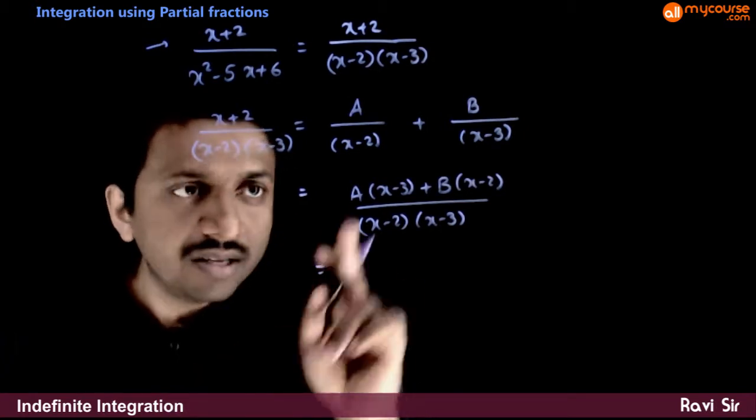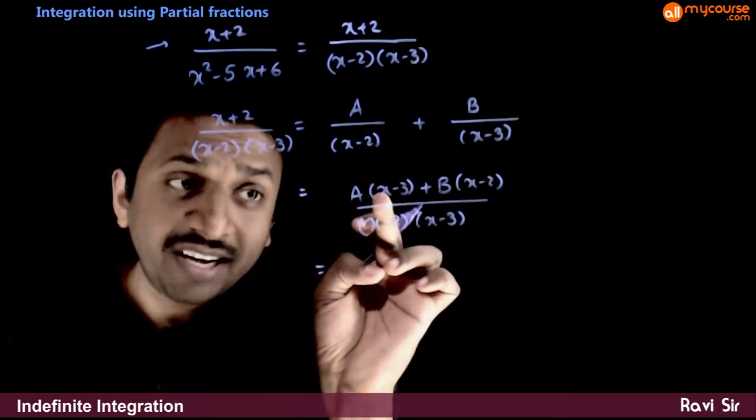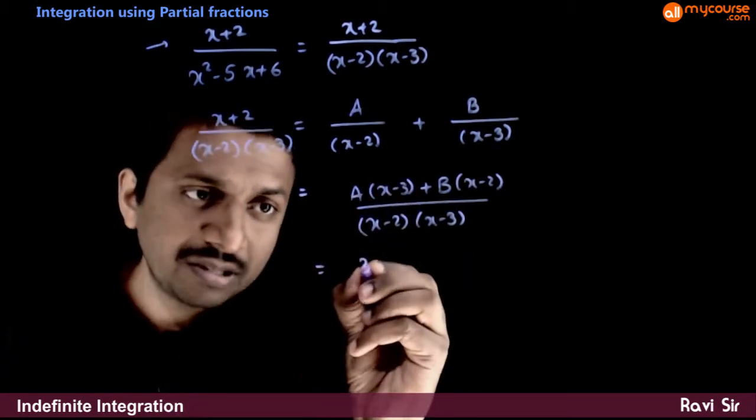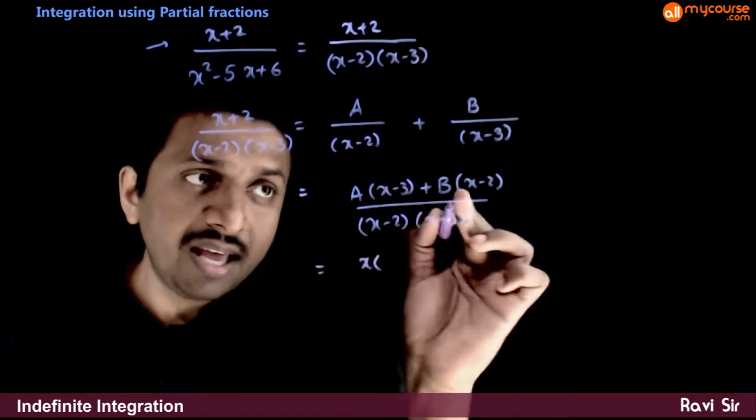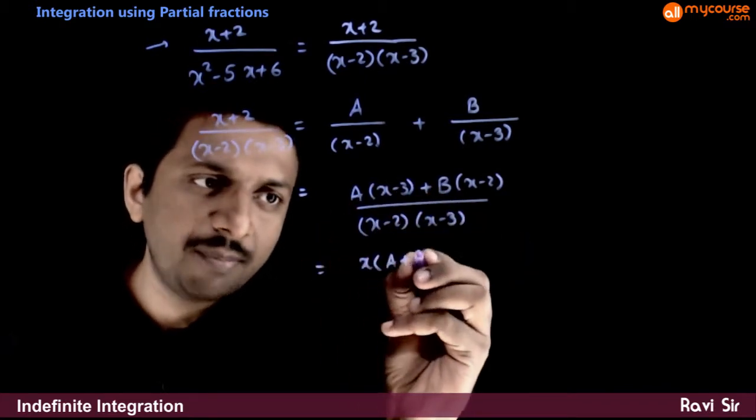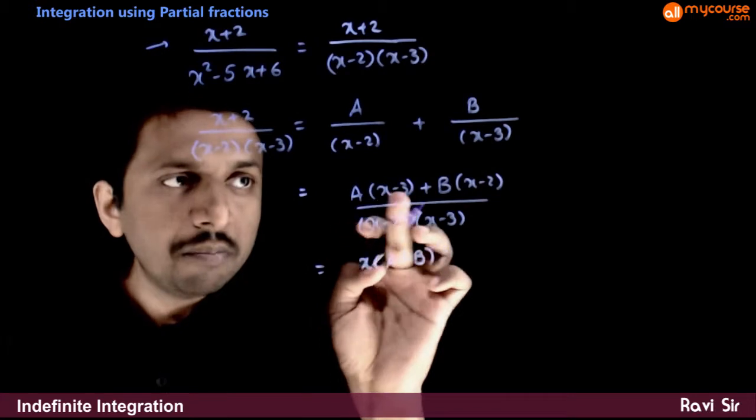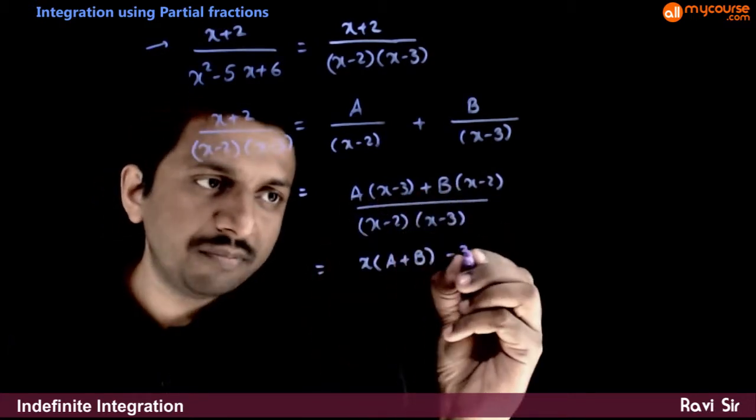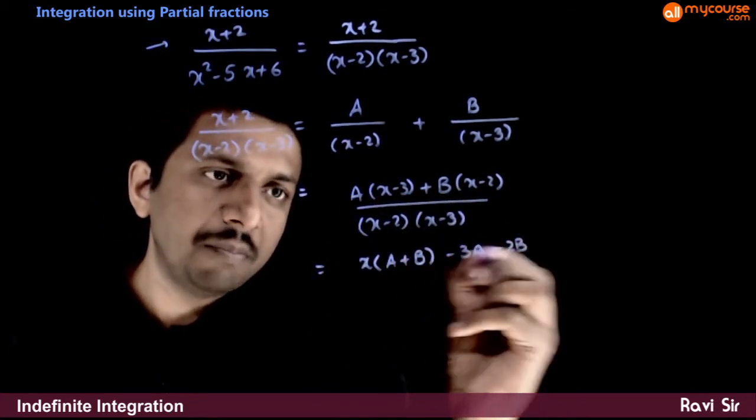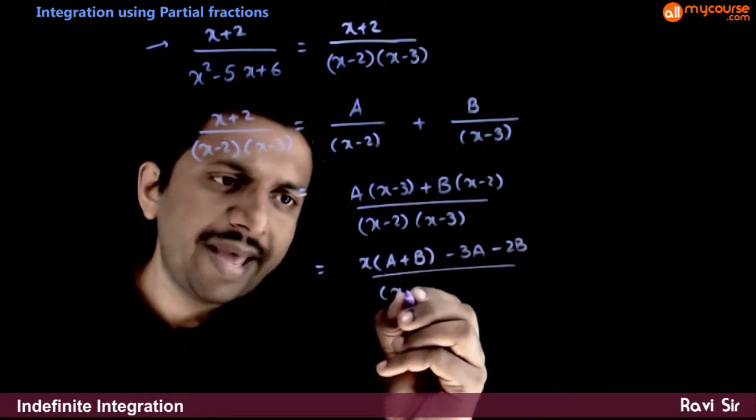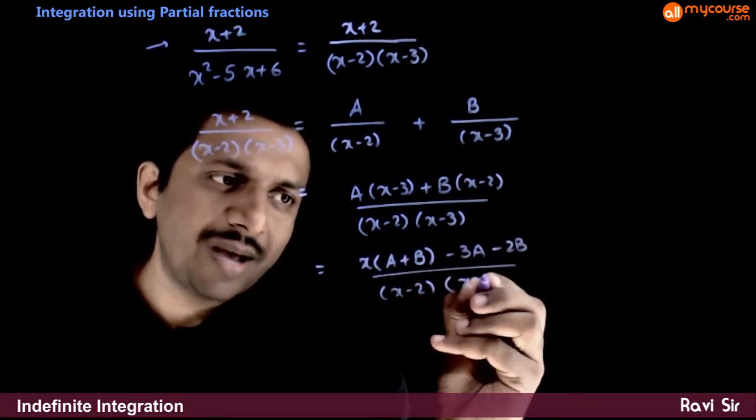That is equal to - if you take the terms containing x here, x is with a and b. So x times a plus b minus 3a minus 2b by x minus 2 into x minus 3.